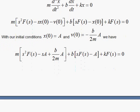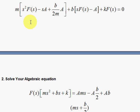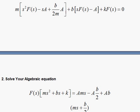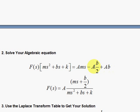Step two: solve your algebraic equation. We'll do that by factoring out capital F(s): I have ms squared, b times s, and k. Then here I have a minus smA, which I'll bring to the other side as plus msA; here I have b over 2 — since the m will cancel — so b over 2 times A brought to the other side; a minus b over 2 times A; and here I have minus bA, on the other side is plus bA. Then I combine these last two — bA and bA over 2 with a negative sign — so that's simply bA over 2. I'll pull the A out, so I have A times (ms + b over 2), and I divide by (ms² + bs + k).